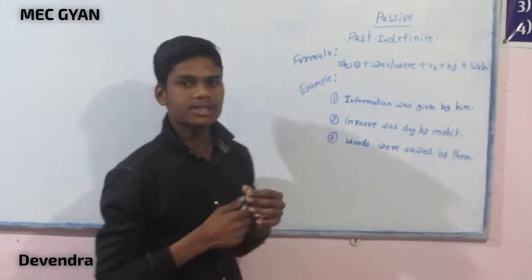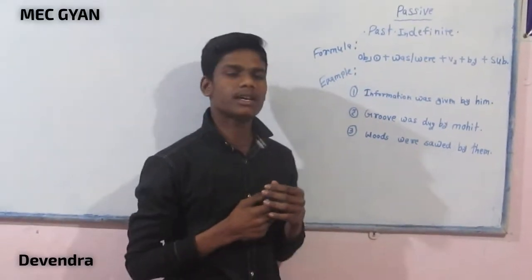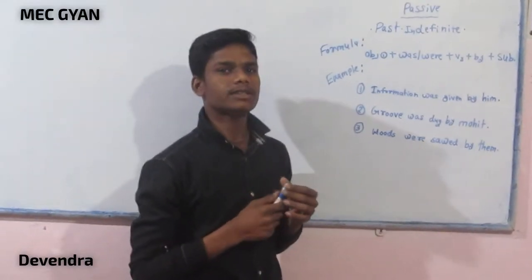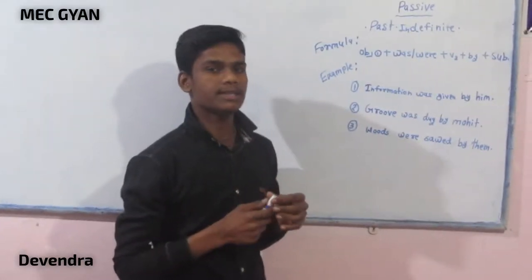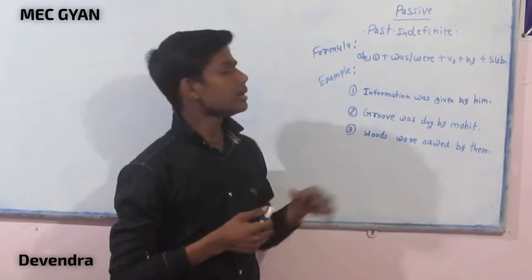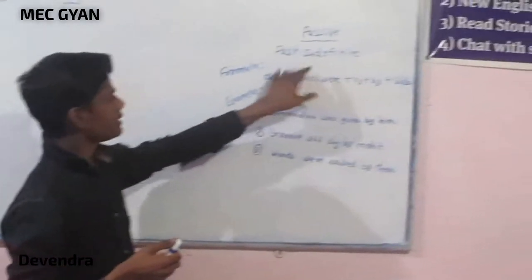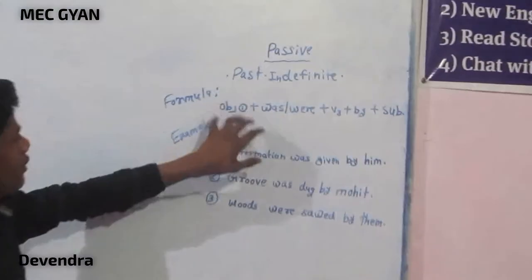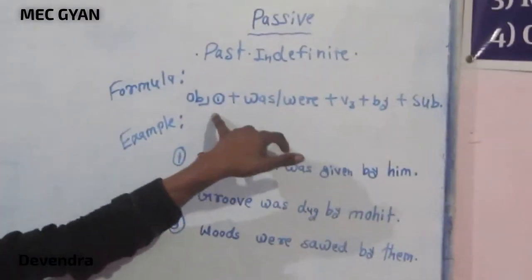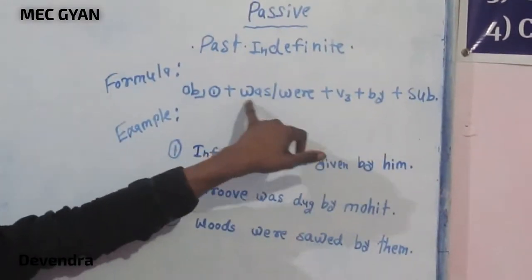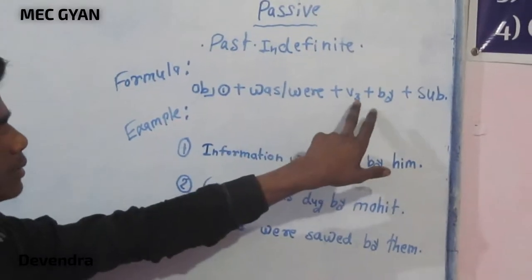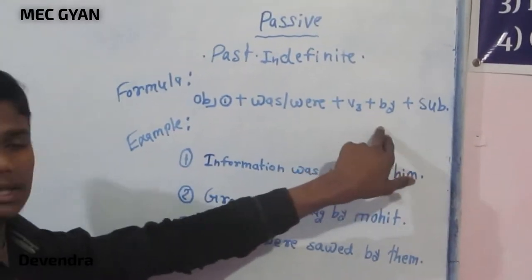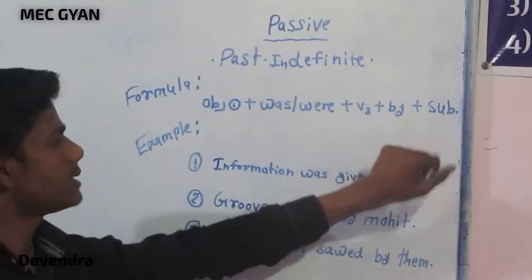Hello friends, here watching MC Gyaan. This is Davian. Today we will learn about passive voice based on past tense. The formula is: object + was/were + verb (third form) + by + subject.